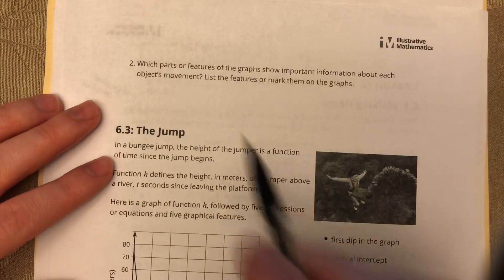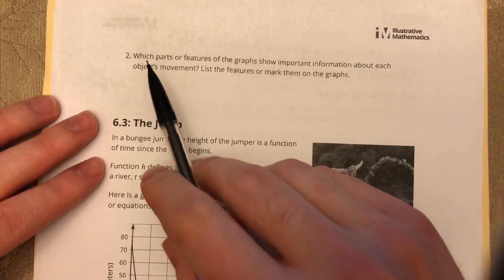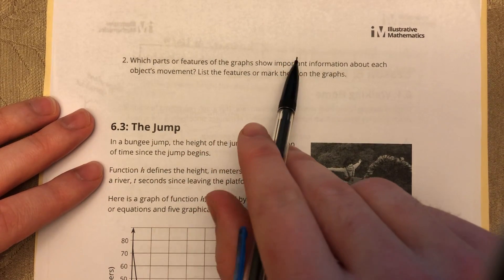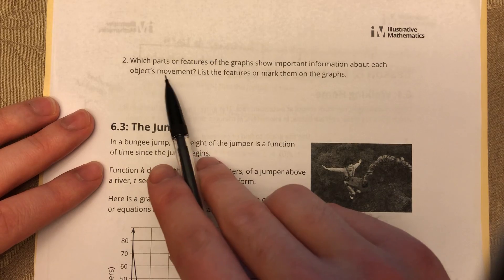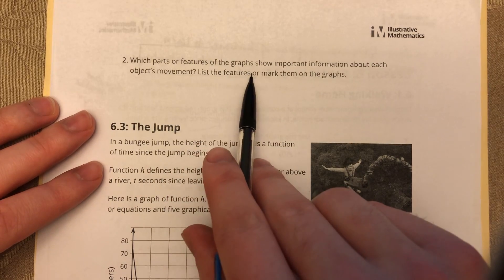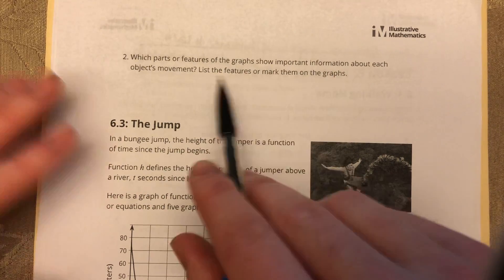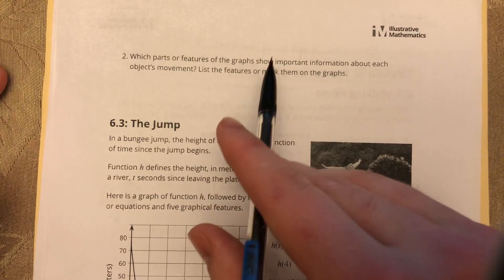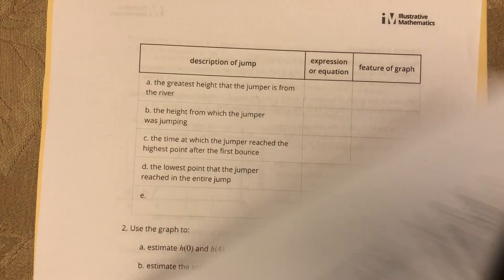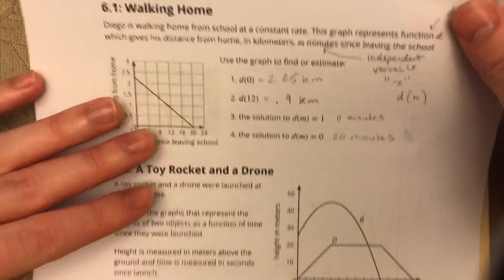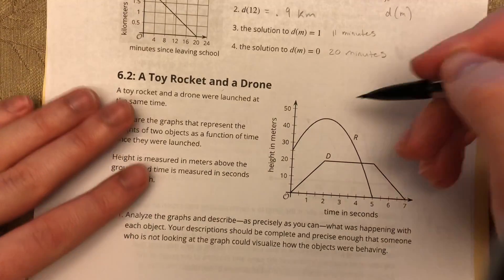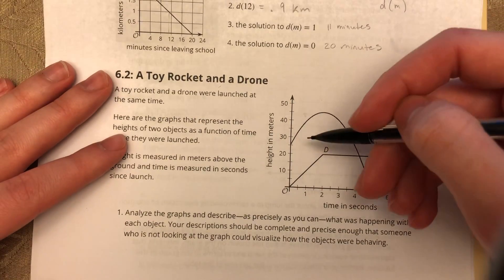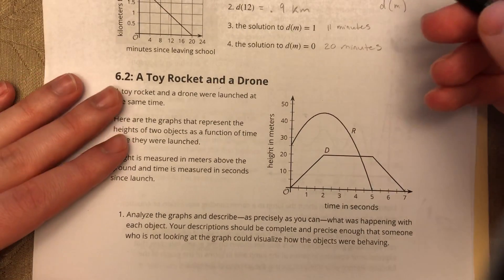Alright, let's go on to number two. After you've done that, we're going to do number two. Which parts or features of the graph show important information about each object's movement? List the features or mark them on the graph. So now this part is being very specific towards the actual graph itself and using more math terminology. So I'm going to show you that because this is more math related, not so much of an interpretation, more based in fact.